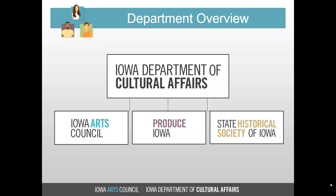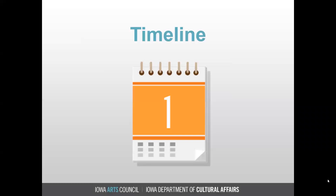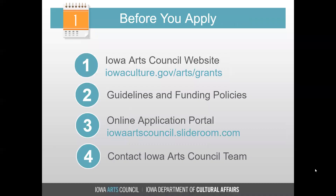Before you apply for an Iowa Arts Council administered program, it's important to determine whether the program is the right fit for you. Make sure you have reviewed all available material for the program. The Iowa Arts Council's application process is entirely paperless — all program materials are available online and all communication will be sent electronically. Go to the Iowa Arts Council's website at iowaculture.gov/arts, then click on the Grants tab. Here you'll find a list of Iowa Arts Council administered programs. Download the guidelines for the Iowa Great Places funding grant program, and make sure you closely read and understand these guidelines. The guidelines also include a scoring rubric so you can see how an application will be evaluated.